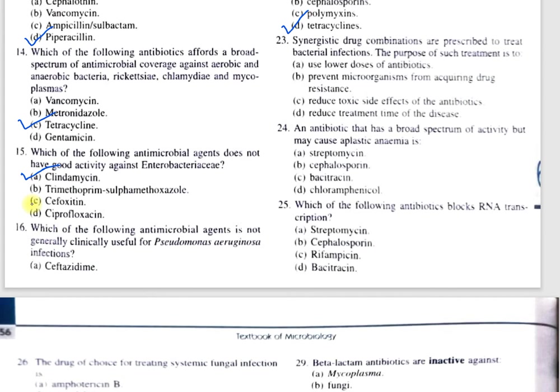Question number 23: Synergistic drug combinations are prescribed to treat bacterial infections. The purpose of such treatment is — A, use lower doses of antibiotics; B, prevent microorganisms from acquiring drug resistance; C, reduce toxic side effects; D, reduce treatment time. The correct option is B, prevent microorganisms from acquiring drug resistance.